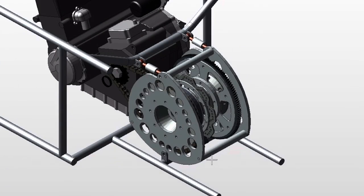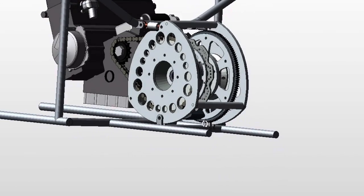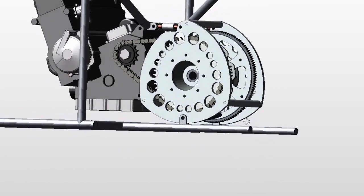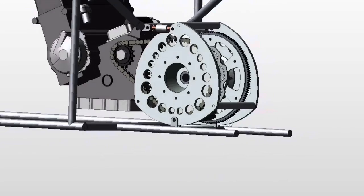These plates will pivot off of the mounts on the bottom of them and the top will be adjusted using heim joints. The reason I designed the top to be able to adjust is so you can tighten the chain.